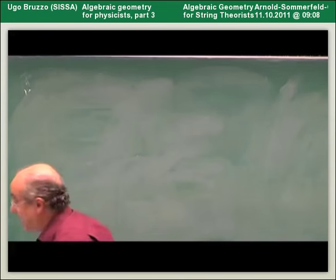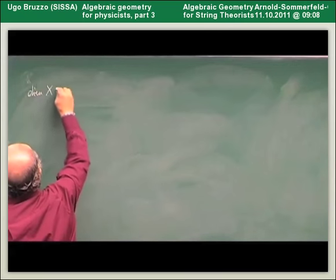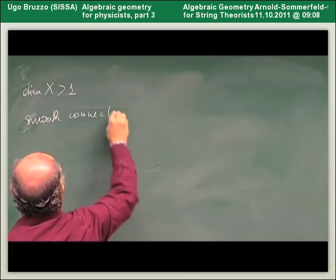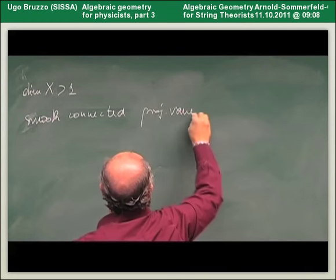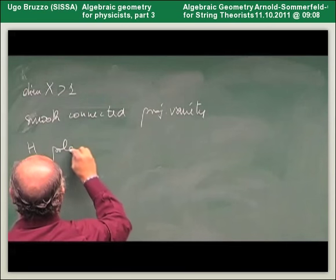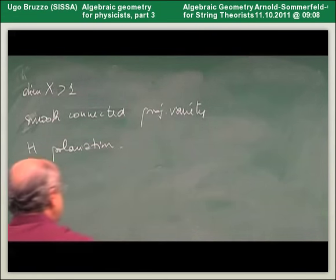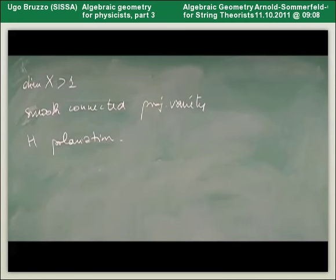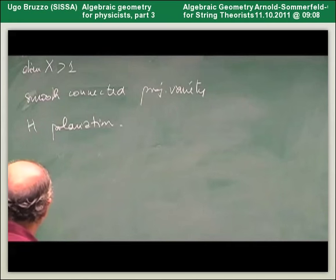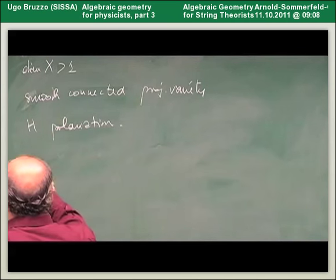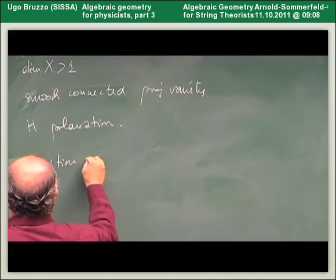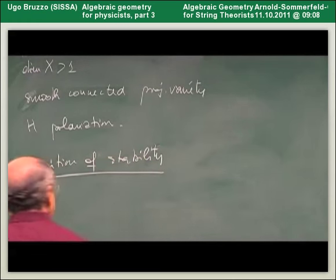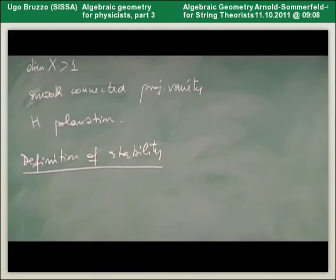Let me spend a couple of minutes on what happens in higher dimensions. We need a smooth connected projective variety X and fix a polarization H. We should define a degree also in this case, which is done in a very similar way. The first issue is the definition of stability or semi-stability. Now the two definitions — slope stability and Giesecker stability using the Hilbert polynomial — are different.